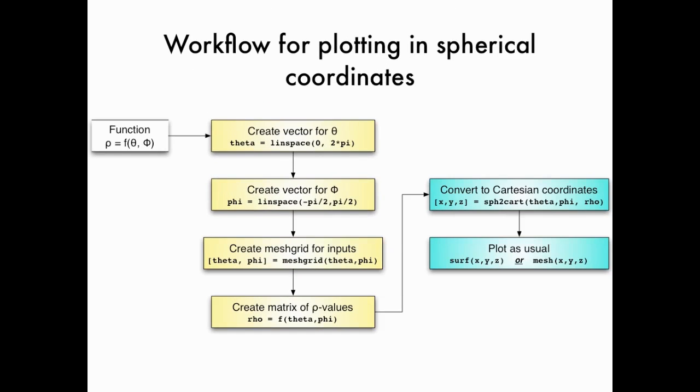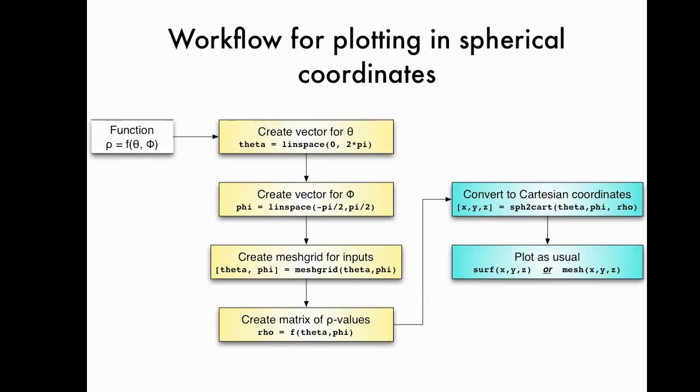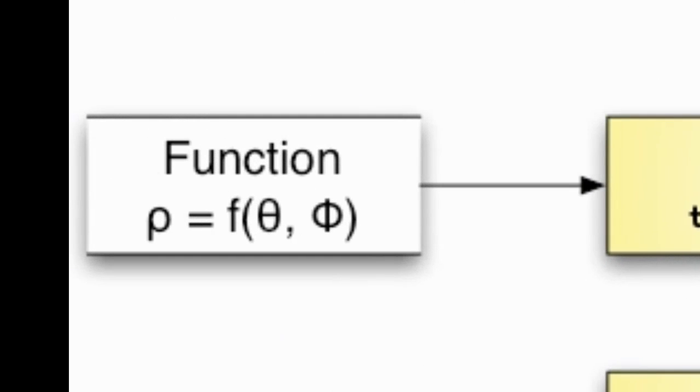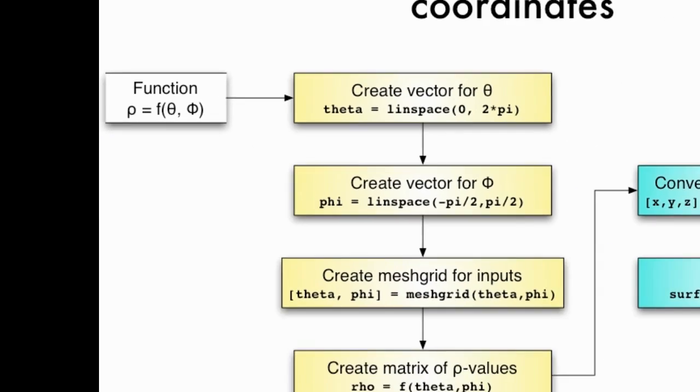So now let's think about how we plot surfaces in 3D using spherical coordinates. This is going to be almost the exact same workflow that we saw in these cylindrical coordinate screencasts. I'm going to start with a function rho in terms of theta and phi, and that could be a constant function, and we'll see one of those in a moment.